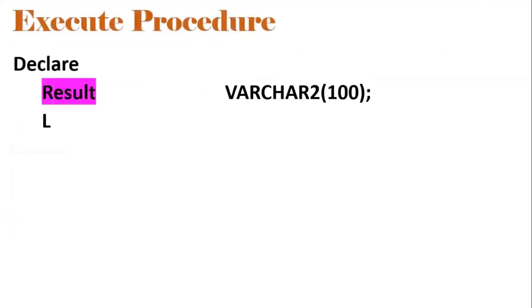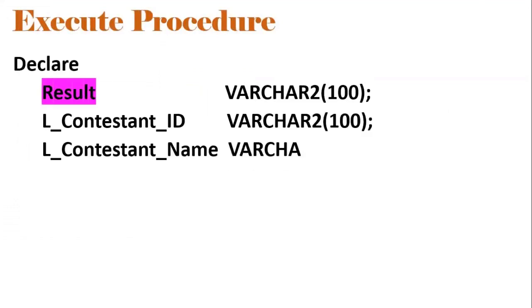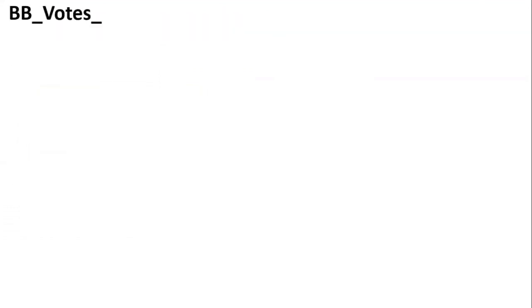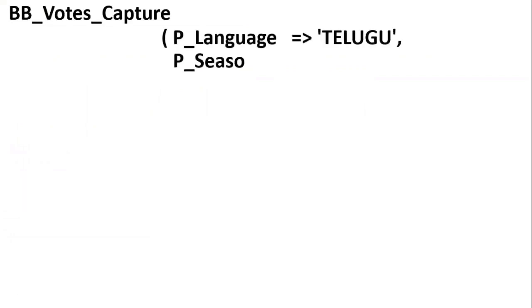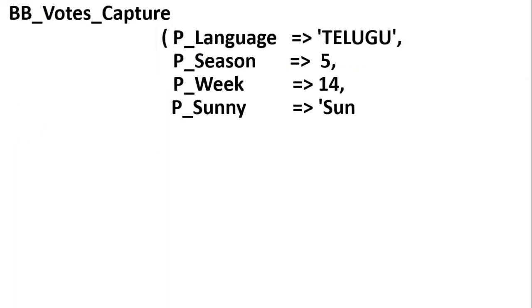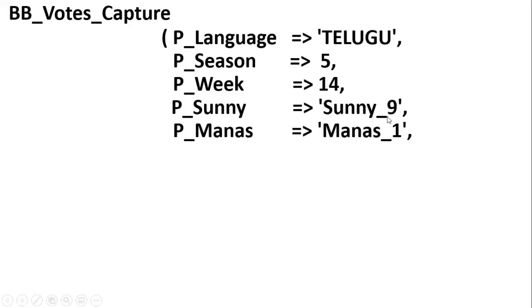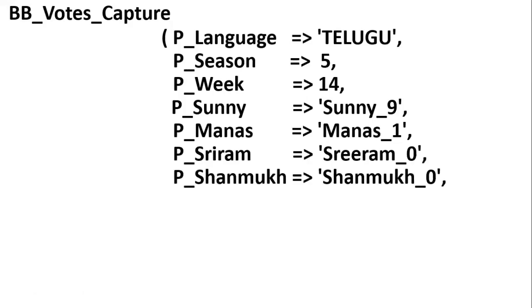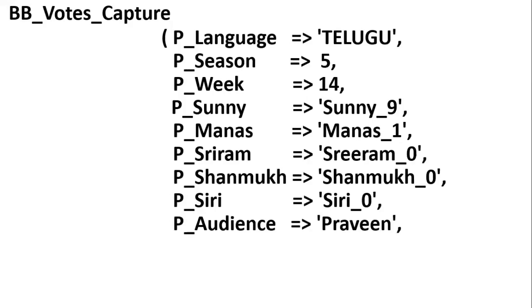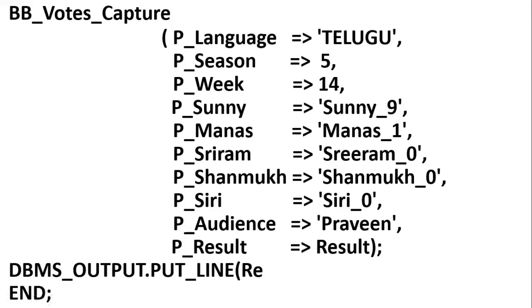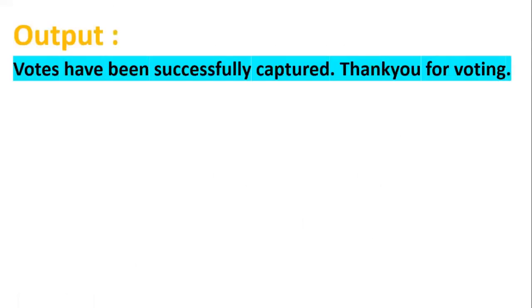Using the anonymous block to execute BB_votes_capture: we pass language Telugu, season 5, week 14, Sunny_9 (Sunny with 9 votes), Manas_1 (Manas with 1 vote), Sriram_0, Shanmukh_0, Siri_0, the audience name, and P_result as a VARCHAR2 variable. The output displayed using DBMS_OUTPUT would be: 'Votes have been successfully captured. Thank you for voting.'